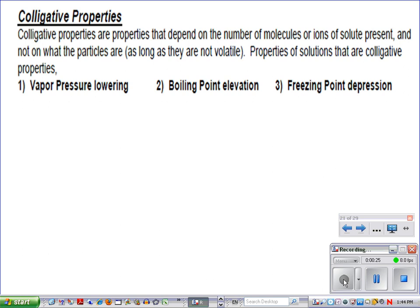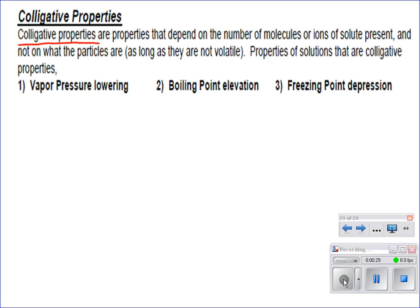Here is the definition: colligative properties are properties that depend on the number of solute molecules or ions that are in a solution. These particular properties are changed based on the number of those in solution. It doesn't really matter what those particles are — it's the number that affects these conditions. And they are vapor pressure, boiling point, and freezing point.